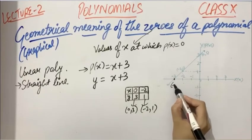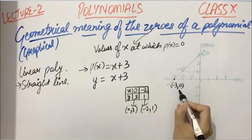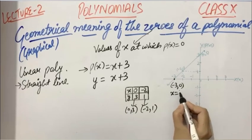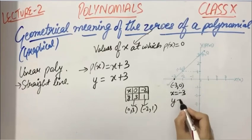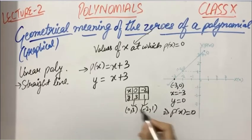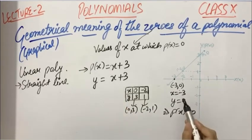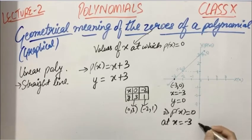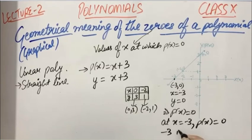Which means x is -3 and y is 0, which means P(x) is 0, because we took y in place of P(x). That means at x equals -3, P(x) is 0, which means -3 is the zero of this polynomial.